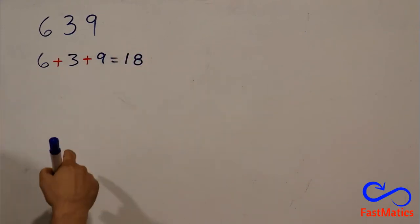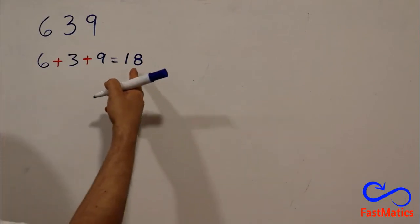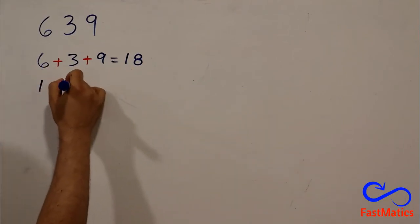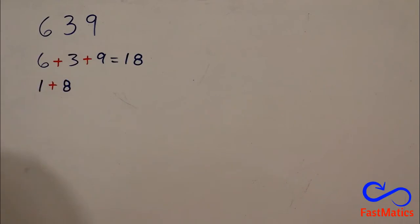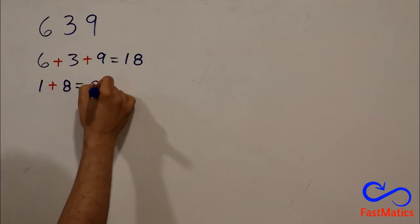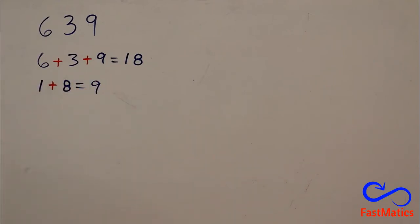And we can go further. 1 plus 8, 9, is 9. A result of the table of 3, yes. 3 by 3 is 9.